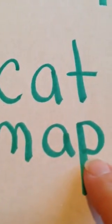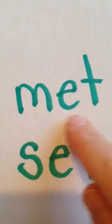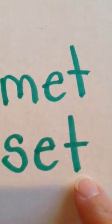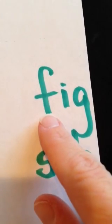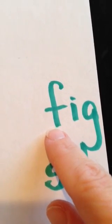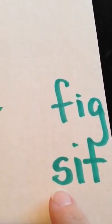Map. Map. Met. Met. Set. Set. And when you're reading, first of all, you'll probably start sounding out the words 'f-i-g.' But then you'll learn to blend it: 'fig.' You'll keep your voice going. Sit.